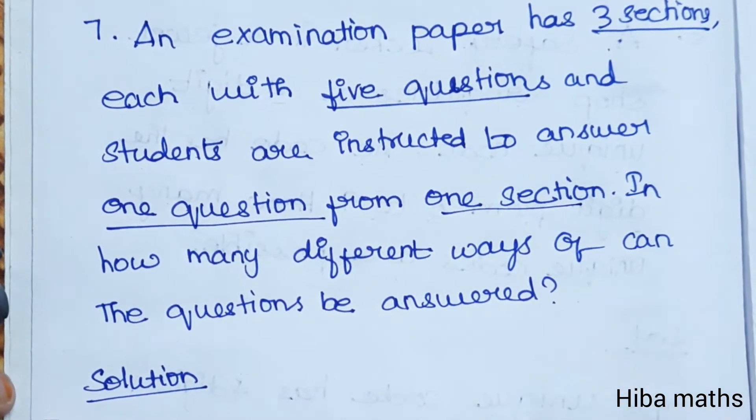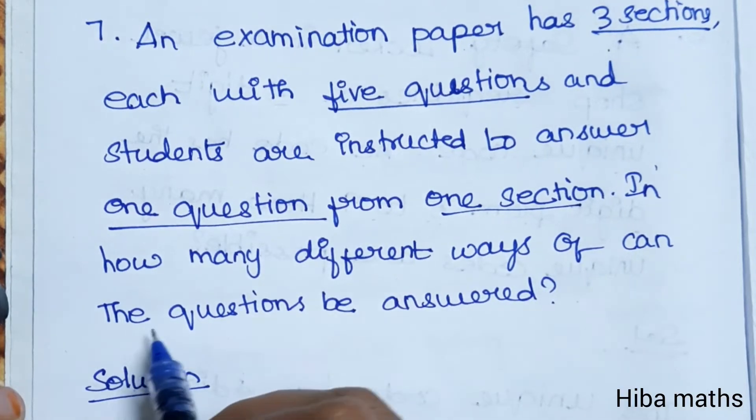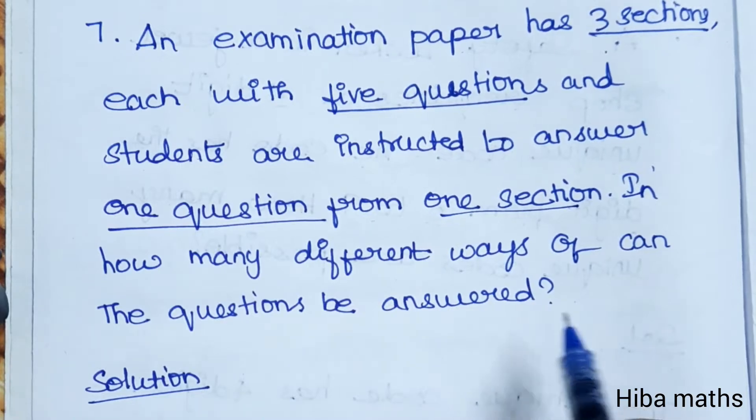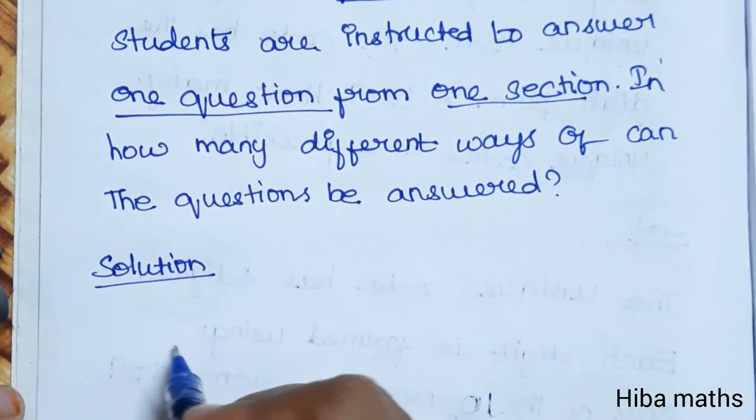In how many different ways can the question be answered? So, how many possible ways can the question be answered? This is a diagram that we have to answer.